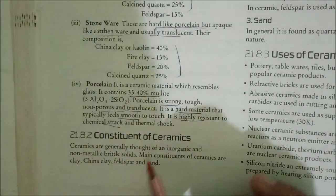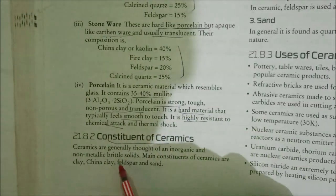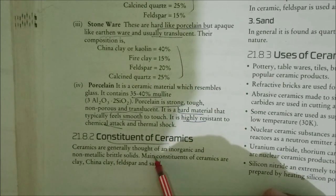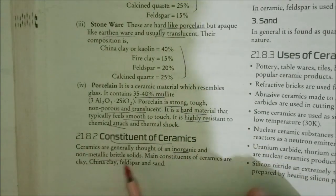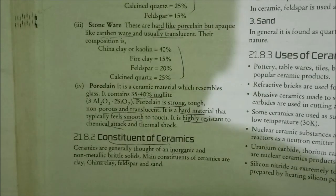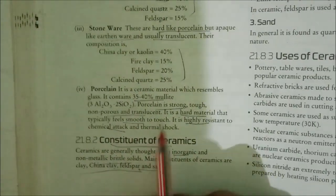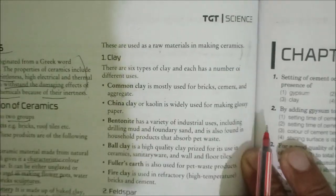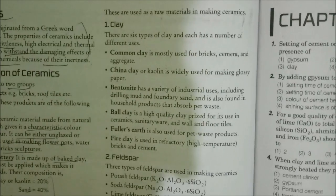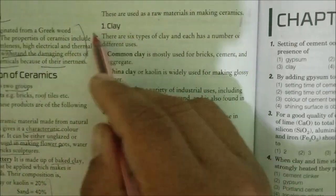Let us see now about the constituents of ceramics. Ceramics are generally thought of as inorganic and non-metallic brittle solids. The main constituents of ceramics are clay, china clay, feldspar, and sand.